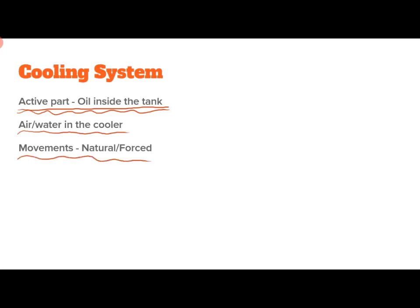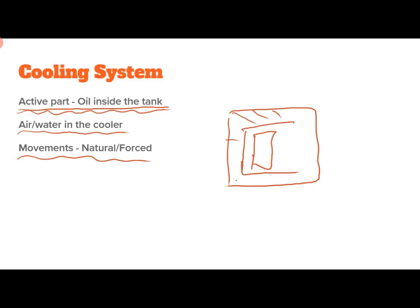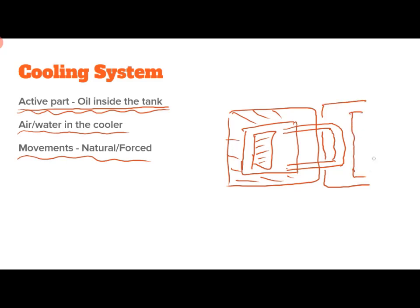Let me draw a typical cooling system schematic. Inside the tank there is a winding and a core — this is a typical winding cross-section. Through pipes, oil will be circulated outside, and the outside tube of this system may be kept in a cooler system in which water may be used or air may be circulated. Here is the inlet and this is the outlet. This is how a typical cooling system will look like.